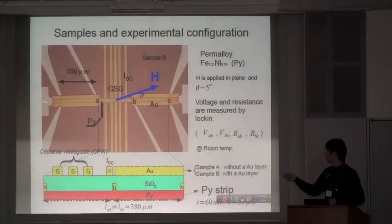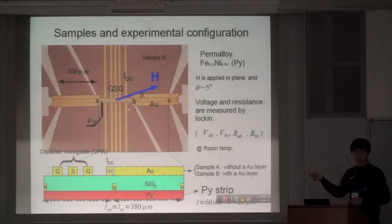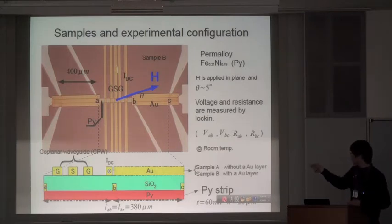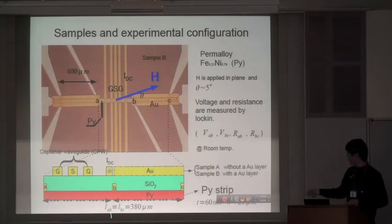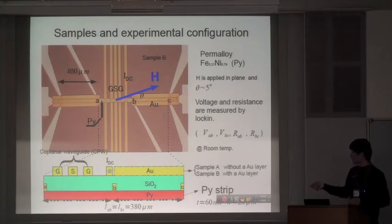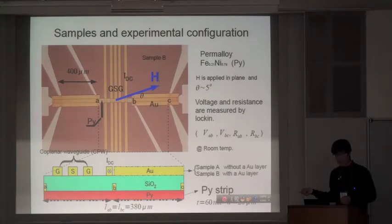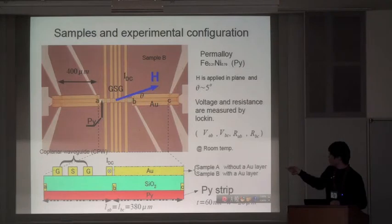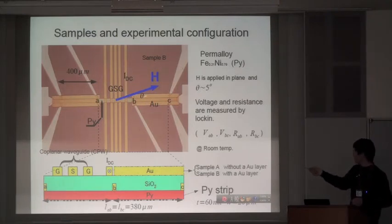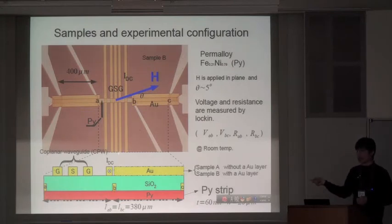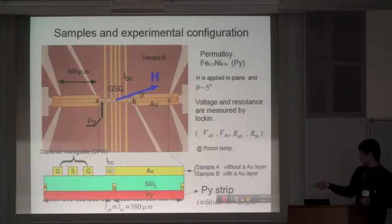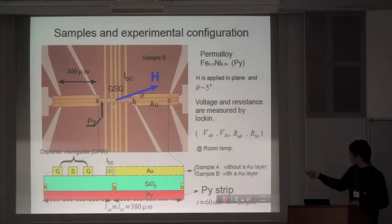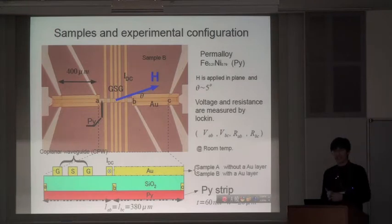This is a sample. This is a long Permalloy strip designed as a spin-wave waveguide. The white part is CPW structure marked as ground signal ground. And there's a side view, we can see Permalloy is covered by silicon oxide. This layer keeps the Permalloy insulated from the top structure, the high-frequency structure. And we can excite the spin wave here by the CPW through microwave. And we expect the spin wave can propagate along the Permalloy strip, and then we can detect it through several probes. And there's a configuration here. We apply an external magnetic field in-plane, almost parallel to the strip.